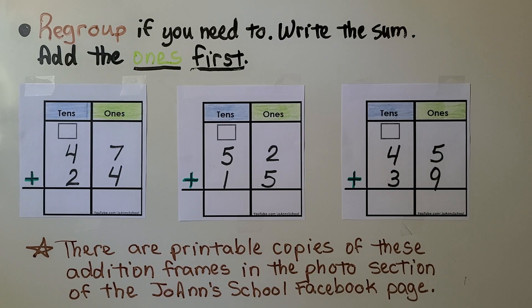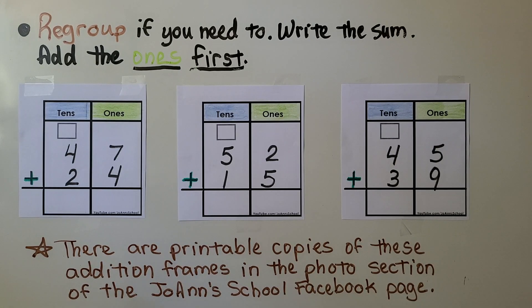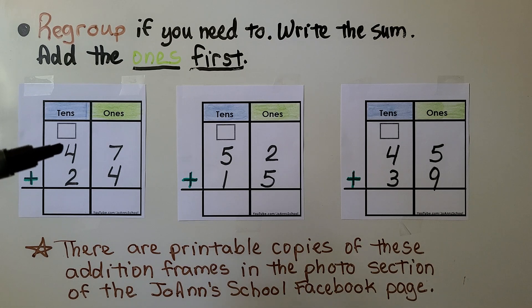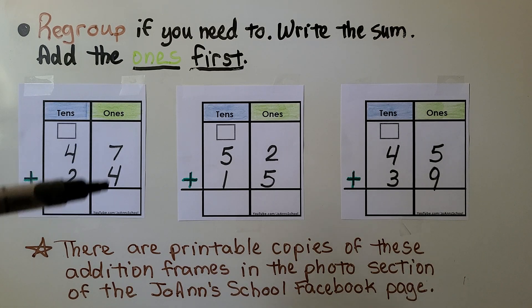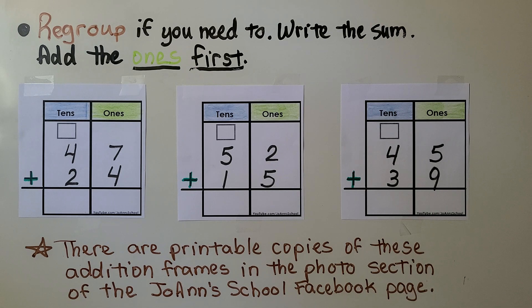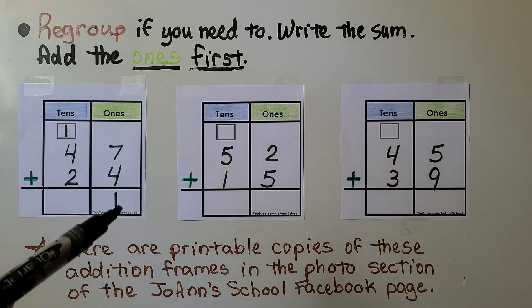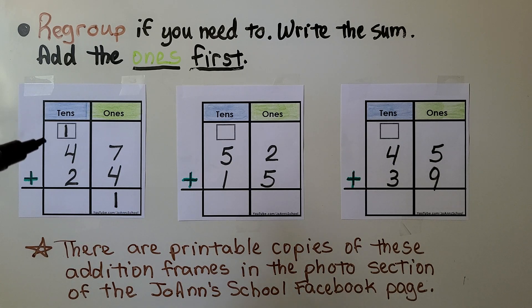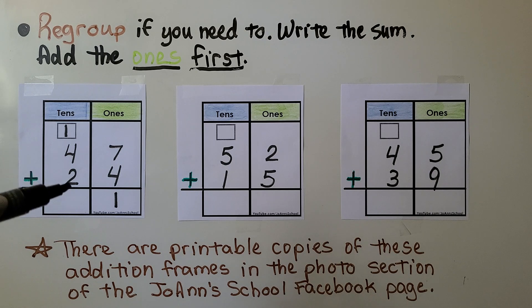We regroup if we need to. We write the sum. Add the ones first. We have 47 plus 24. Add the ones first. 7 plus 4 is 11. 11 is 1 10 and 1 1. Now we add the tens place. 1 plus 4 is 5, 6, 7. We have 7 tens. 47 plus 24 is equal to 71.